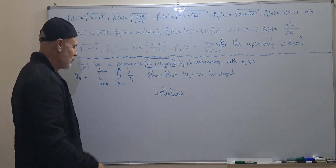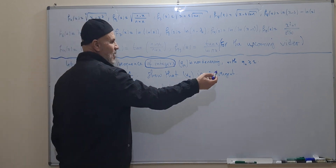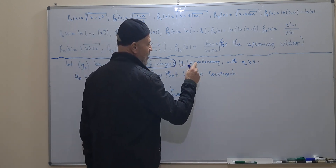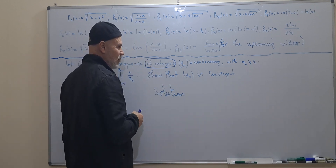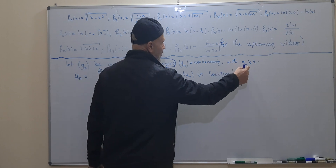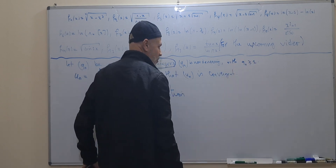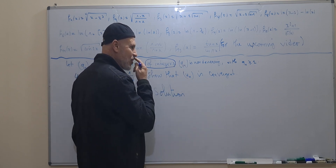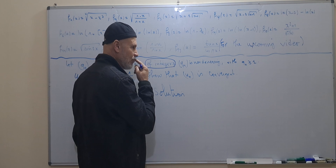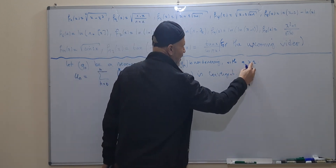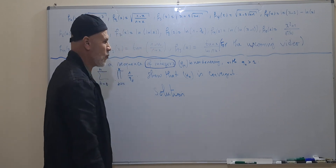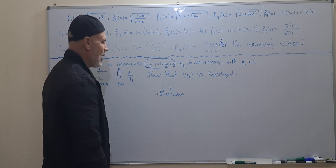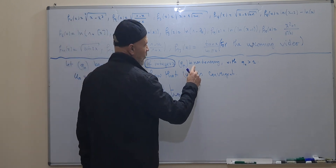Natural numbers — we start from q_0, with q_0 strictly greater than one, and I will tell you why later. We also need that q_m is a non-decreasing sequence. So here we have two informations: q_0 strictly greater than one, and q_m is non-decreasing.